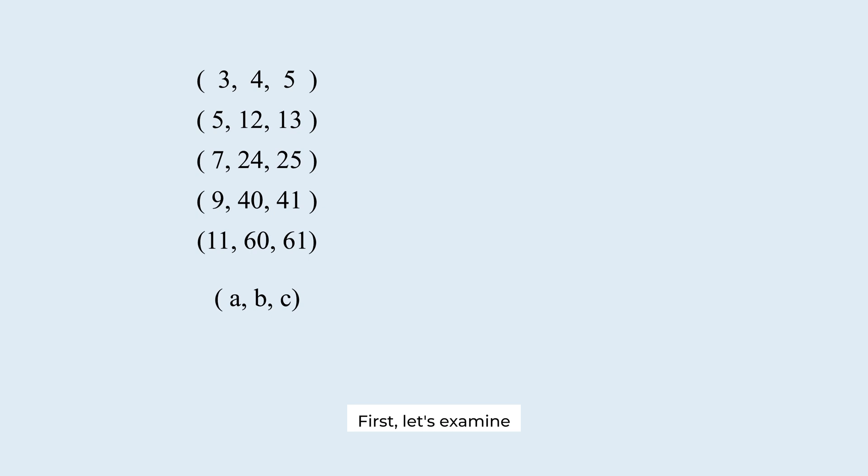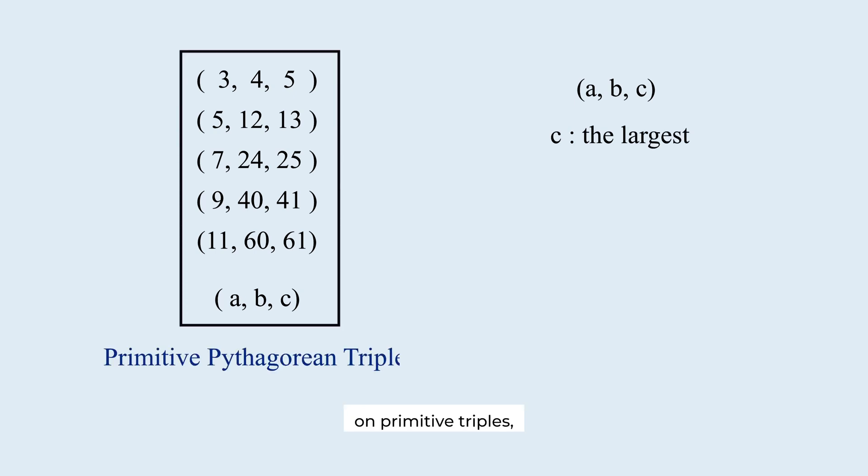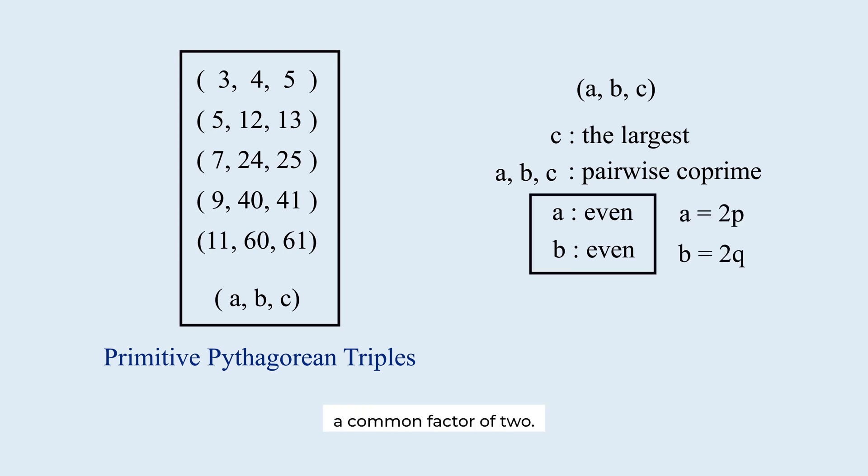First, let's examine the structure of a, b, and c. Among the three, c is the largest. Because we are focused on primitive triples, all three numbers must be pairwise coprime. This means that a and b cannot both be even. If they were, they would share a common factor of 2. So, at least one of a or b must be odd.